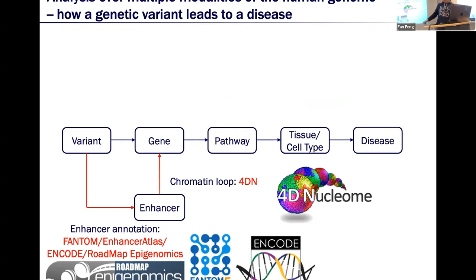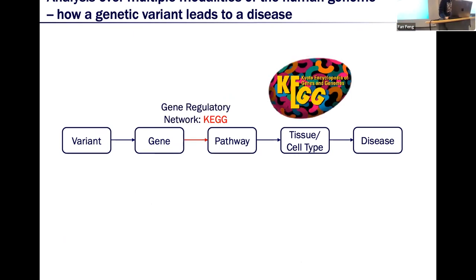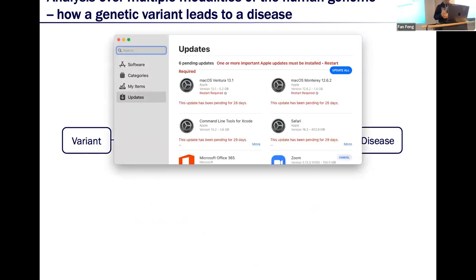The same interaction between enhancers and genes can be found in the 4D Nucleome data portal. Then for pathways, they contain relationships between genes, and we have data sources such as KEGG and Reactome.